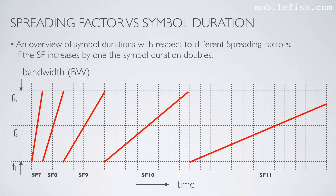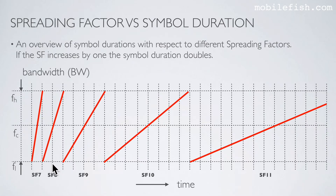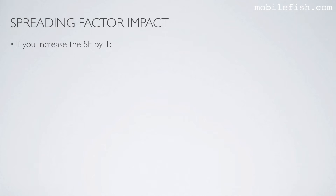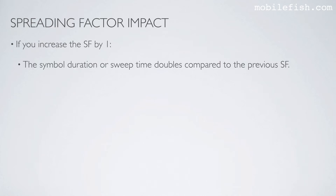Here is an overview of symbol durations with respect to different spreading factors. If the spreading factor increases by 1, the symbol duration doubles. If the spreading factor increases from spreading factor 7 to spreading factor 8, the symbol duration doubles from 1 to 2. Again, if the spreading factor increases by 1, the symbol duration doubles from 2 to 4. If you increase the spreading factor by 1, the symbol duration or sweep time doubles compared to the previous spreading factor.